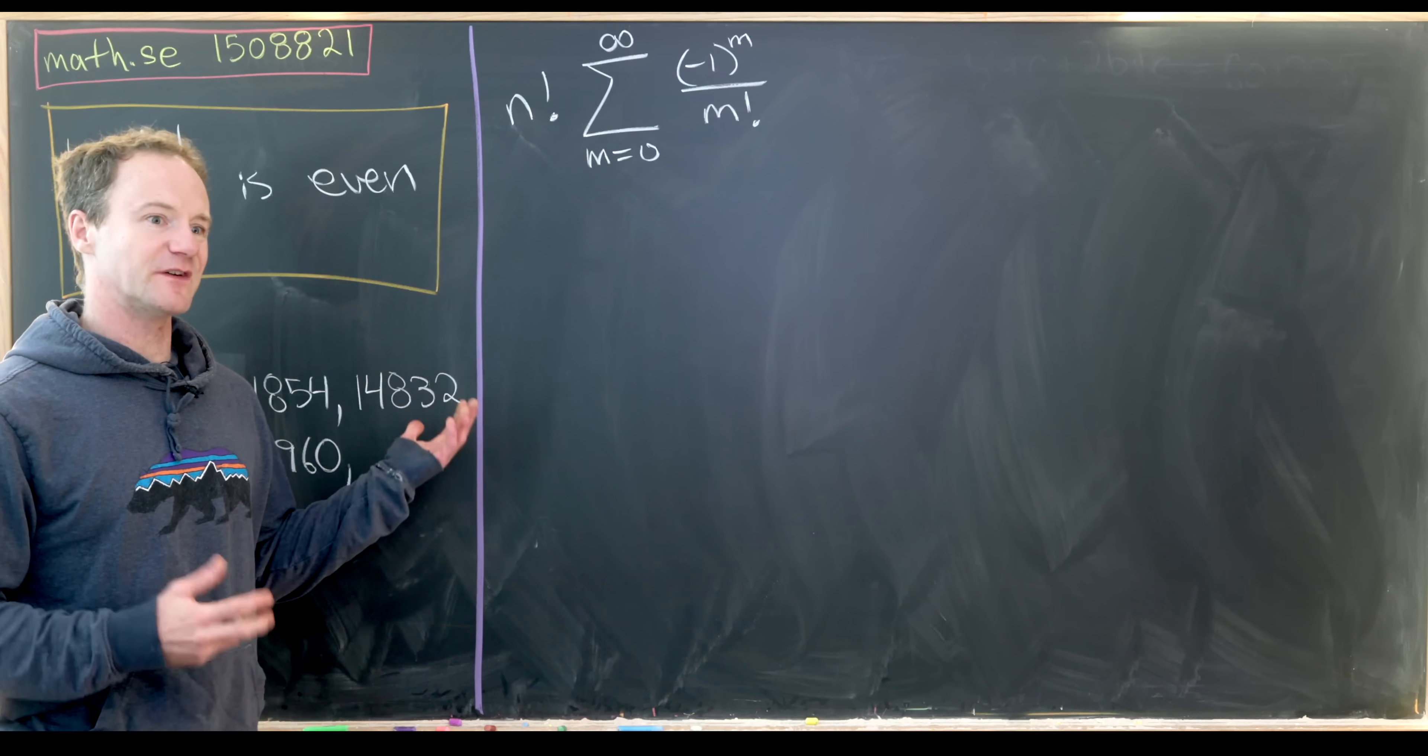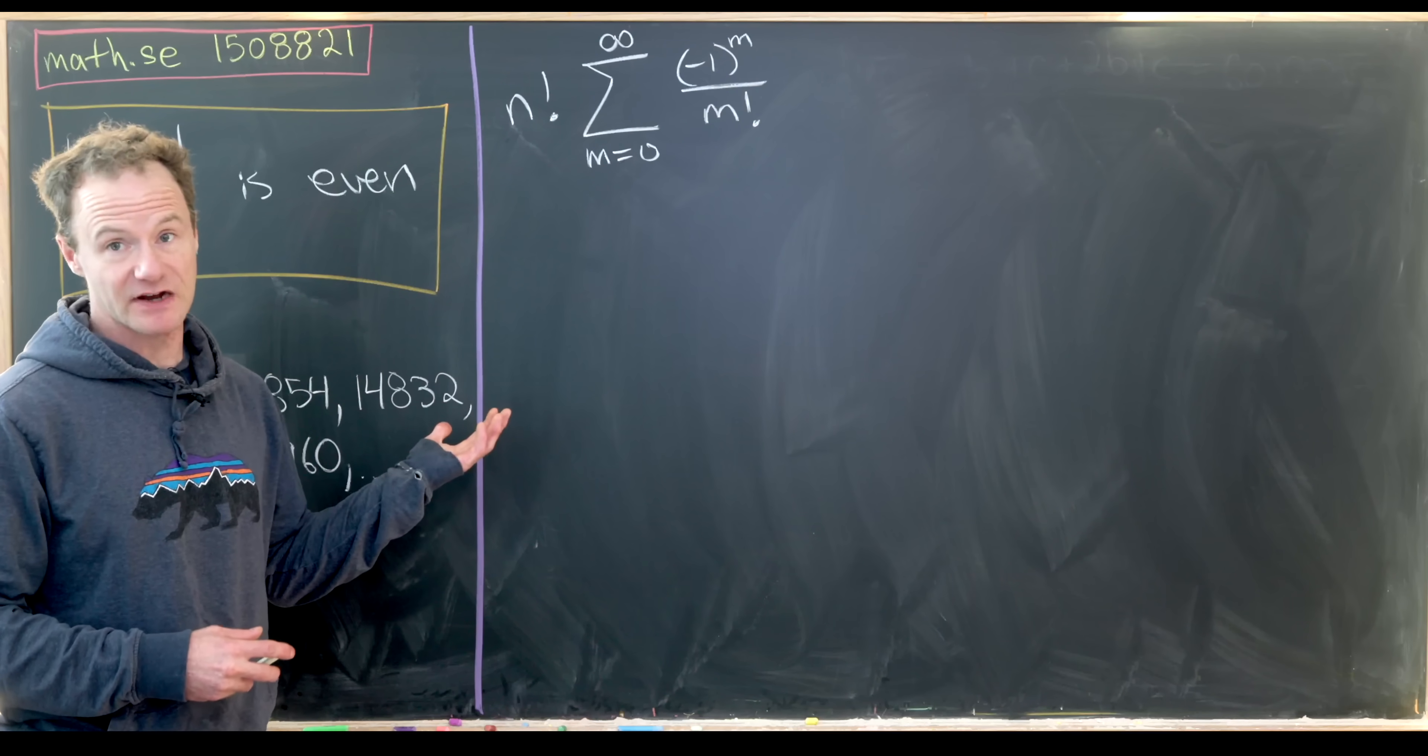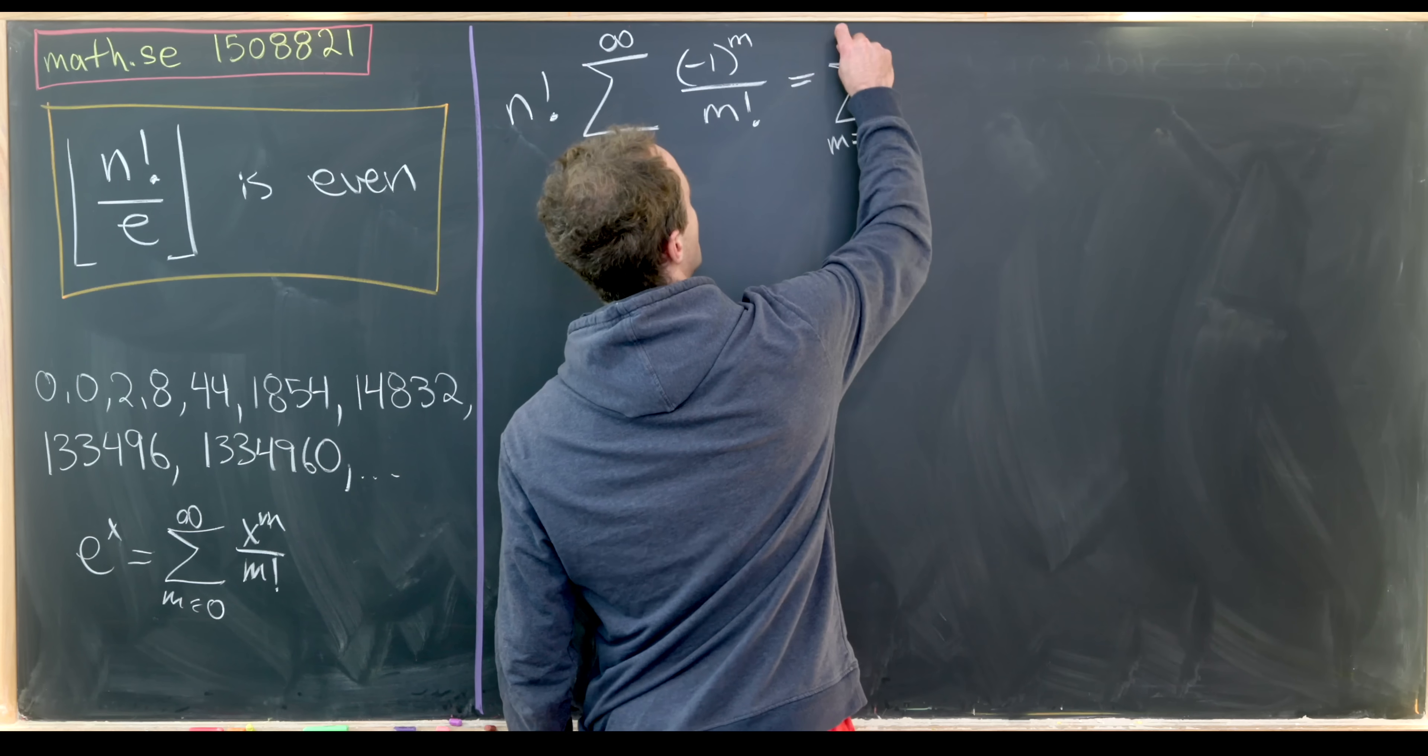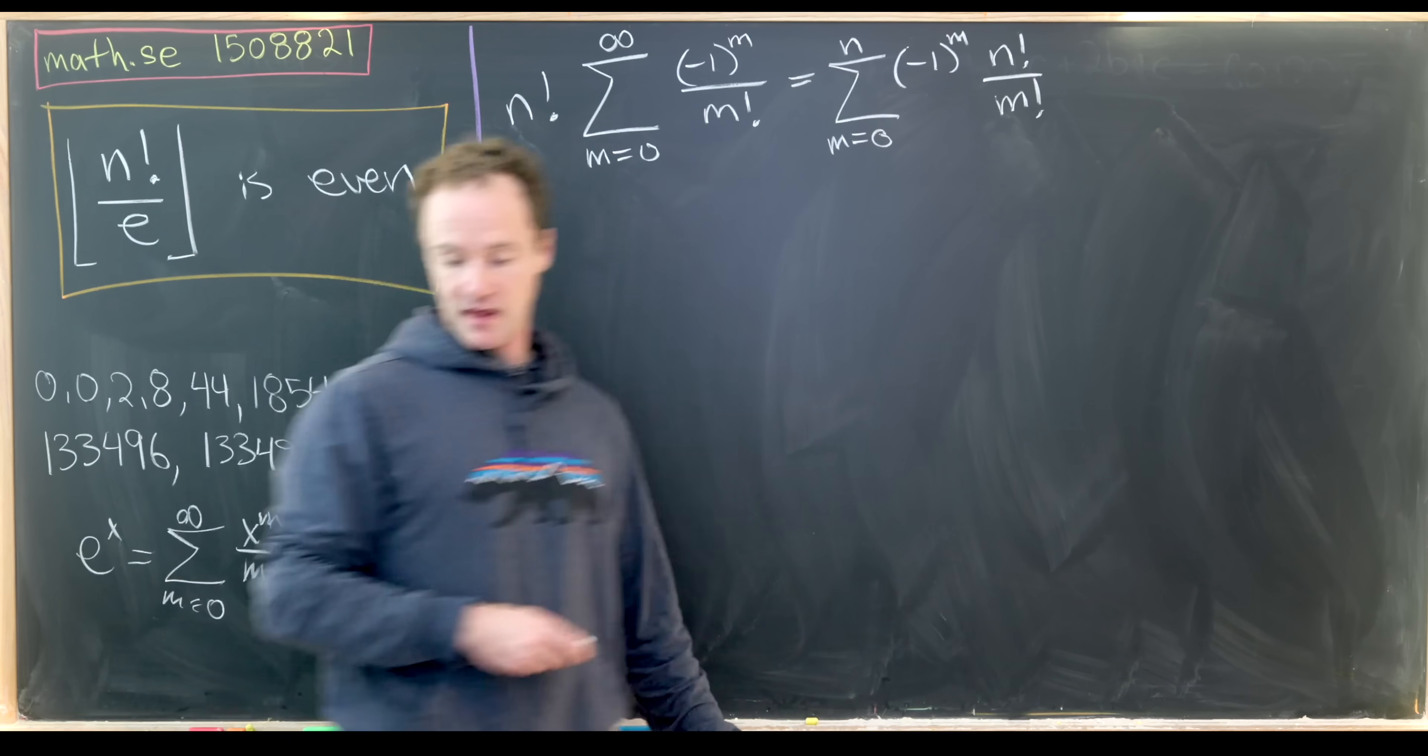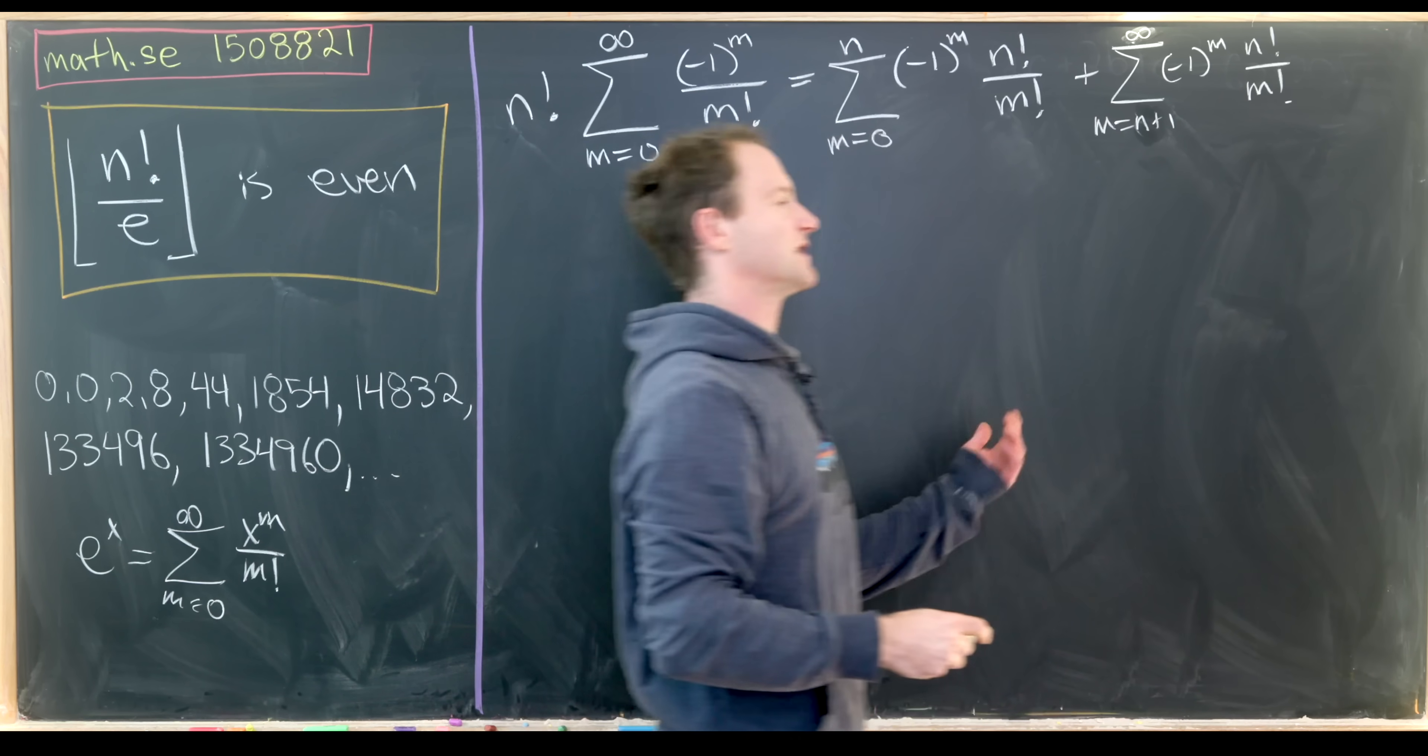Now maybe the first thing that you might want to do is split this up into two sums, one sum that goes up to this number n and then everything after that. And that's because the sum that goes all the way up to n is going to be a sum of integers since it's alternating. So this is going to be equal to the sum as m goes from 0 up to n of minus 1 to the m times n factorial over m factorial, and then we'll have plus all of the rest of it, the sum as m goes from n plus 1 to infinity of minus 1 to the m times n factorial over m factorial.